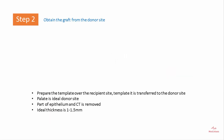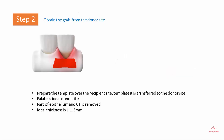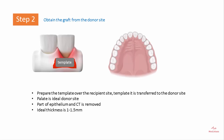Step two involves obtaining the graft from the donor site. A prepared template is placed over the recipient site and then transferred to the donor site. The palate is the ideal donor site, where a portion of epithelium and connective tissue is removed. The ideal thickness of a free gingival graft is 1 to 0.5 mm.